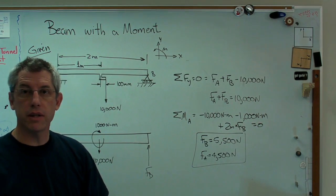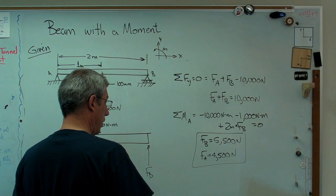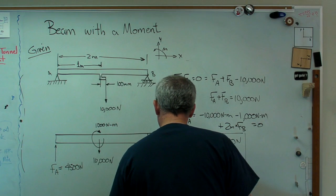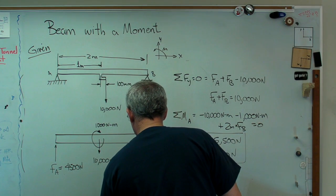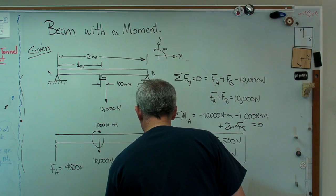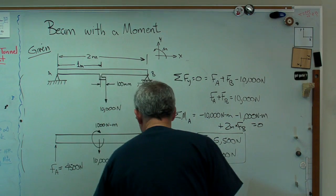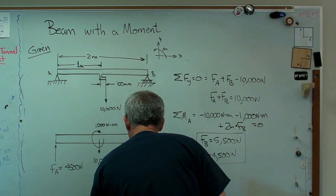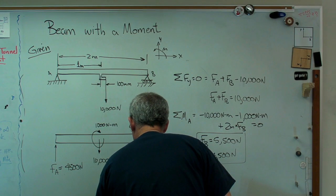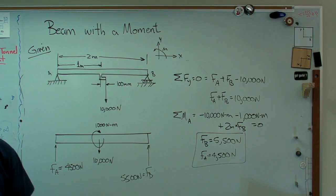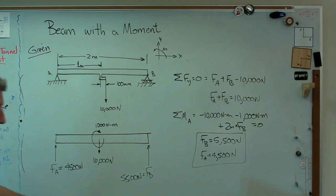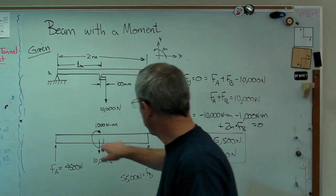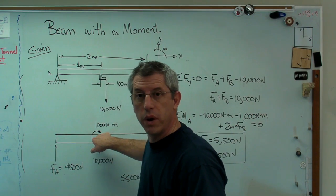So now we've got the statics part of it done. I'll just write those numbers in here. That's going to be 4,500 newtons. And that's going to be 5,500. So we've got everything in place now to start drawing a load shear moment diagram.